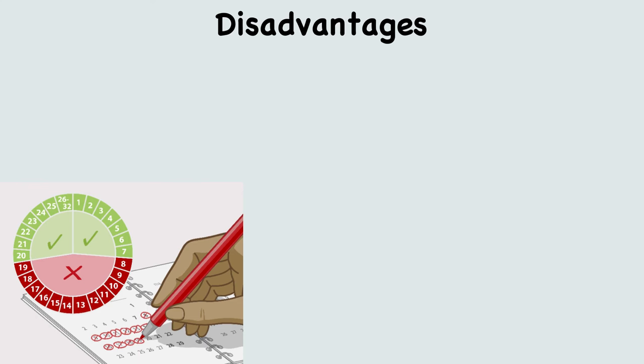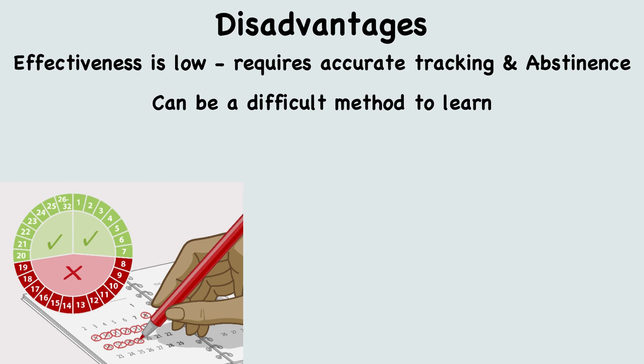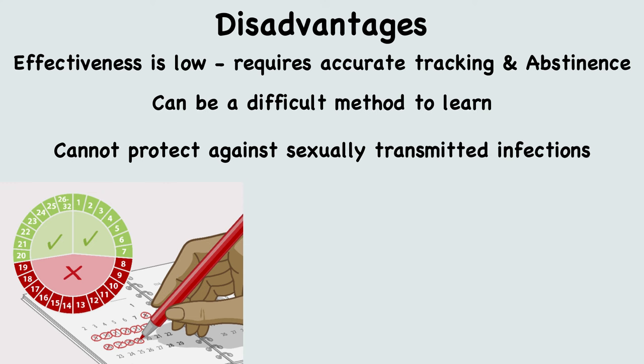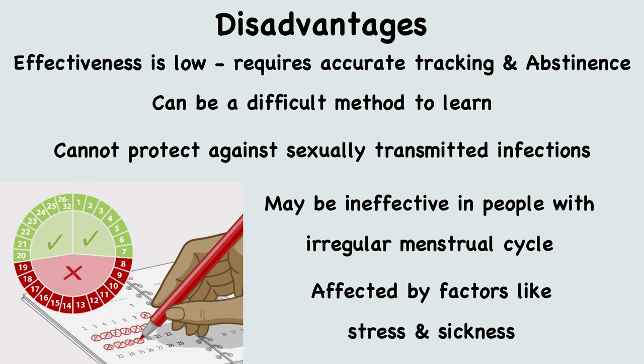The disadvantages of natural family planning are that its effectiveness is low, as it requires accurate tracking of the fertile period and abstinence during that time. It can be a difficult method to learn, does not protect against sexually transmitted infections, and may be ineffective in people with irregular menstrual cycles. It can also be affected by factors like stress and sickness.